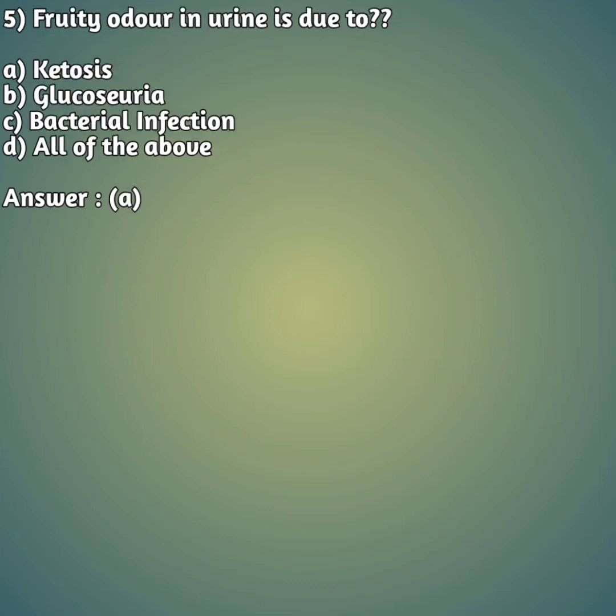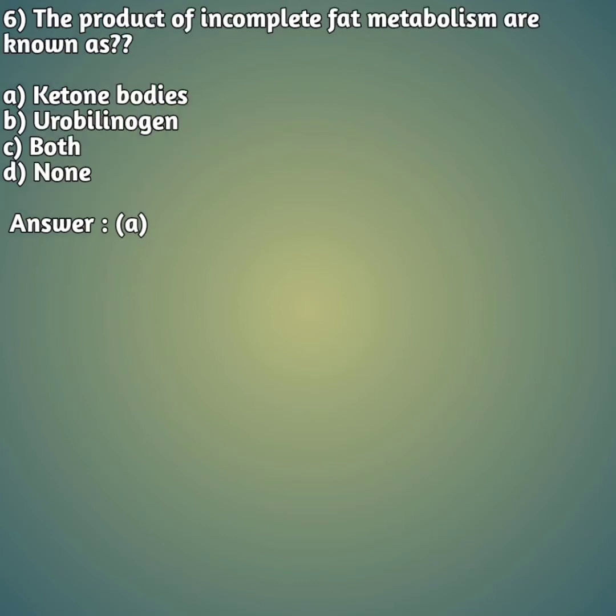Fifth question: fruity odor in urine — that is, a fruity smell — is due to: option A: ketosis, option B: glucosuria, option C: bacterial infection, option D: all. Fruity odor in urine is due to ketosis.